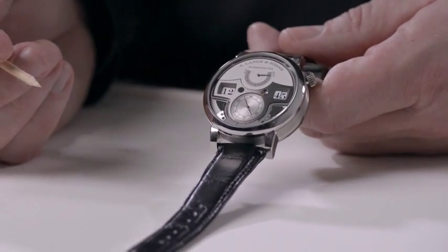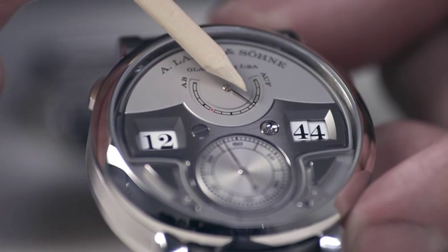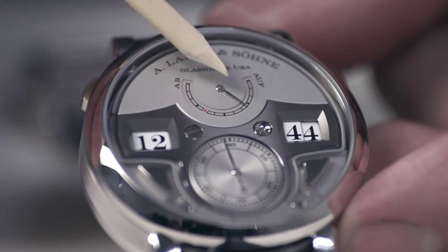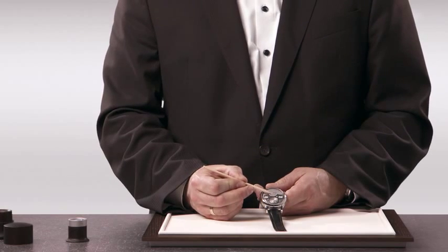To avoid that after chiming several times your movement is running out of power, we have made an indication, a little red dot, on the power reserve. So after a certain amount of striking, the hand will reach that little dot.